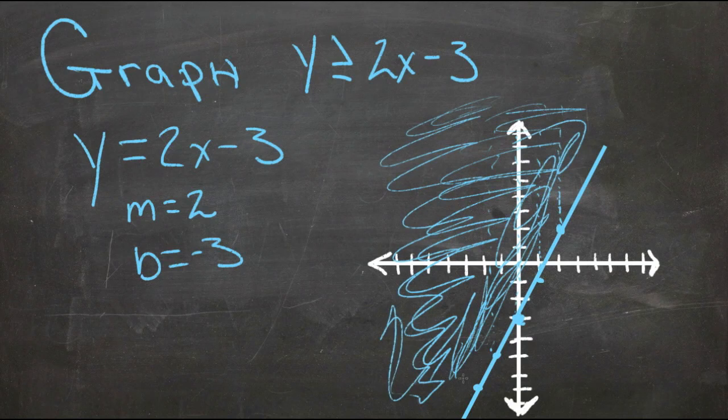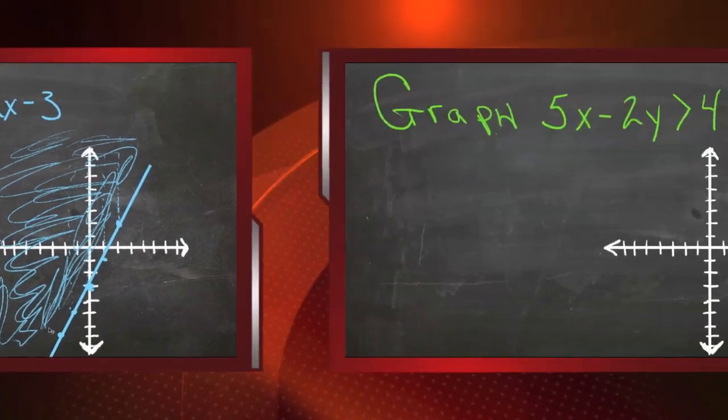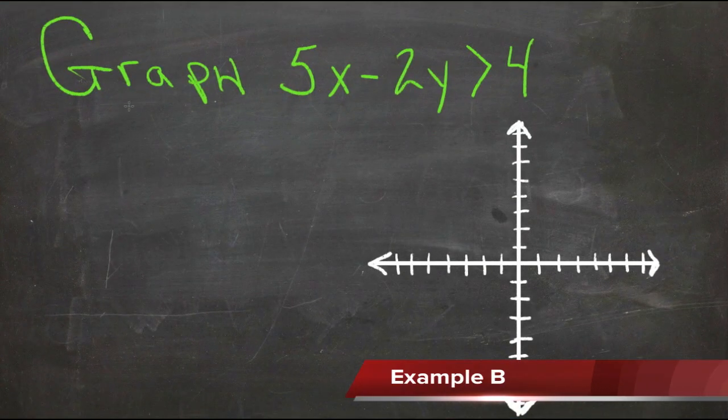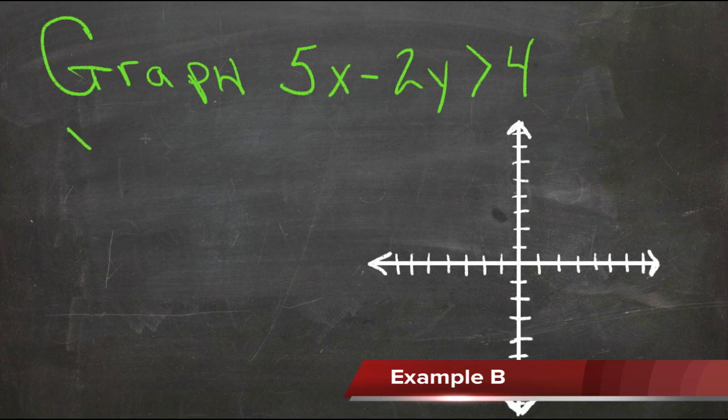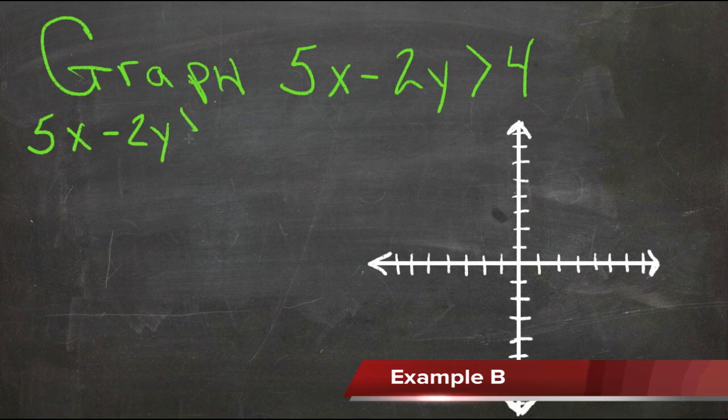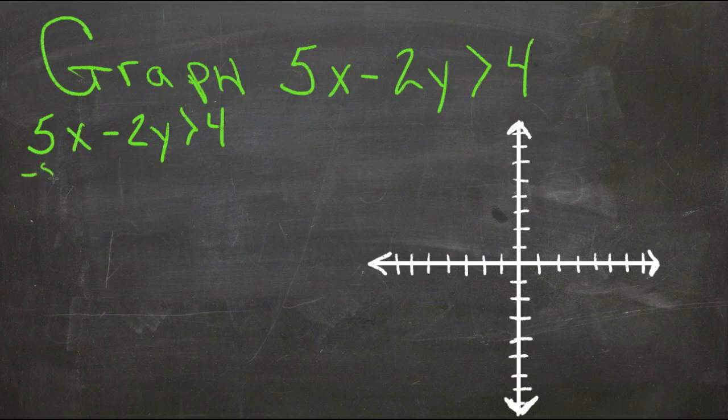To graph this inequality, the first thing we want to do is put it into y equals mx plus b form, which means we need to solve it for y. So let's just rewrite it: 5x minus 2y is greater than 4. So first we'll subtract 5x from both sides.